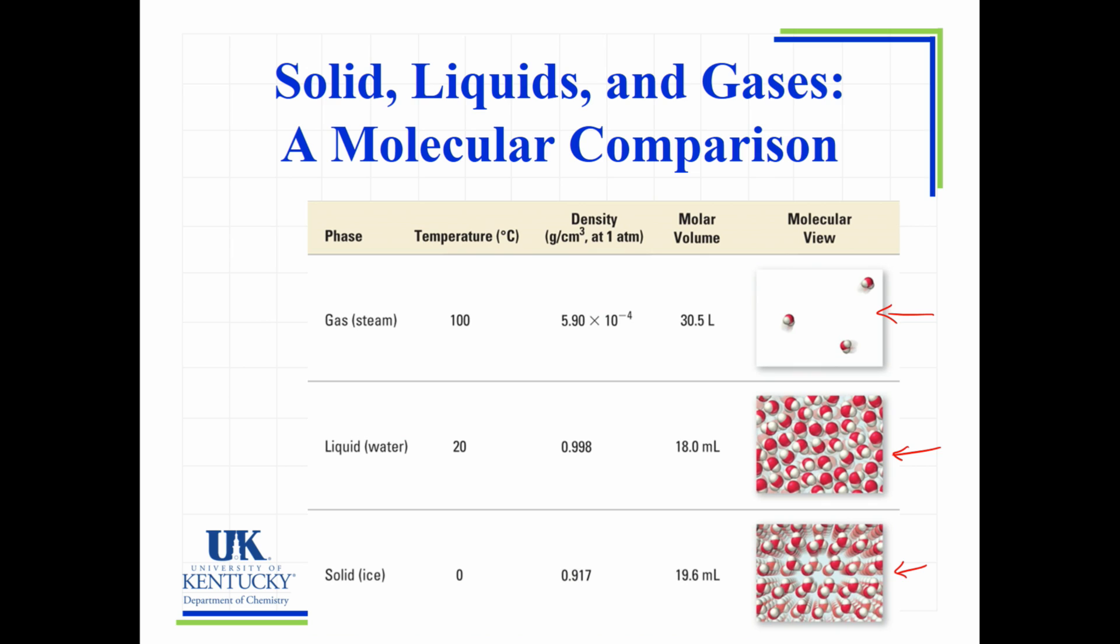The big difference between these properties is in their density. The density of liquid water and ice are about the same. But when you get down to that of a gas, it is way smaller. And this is going to be true for all gases. All gases will be far less dense in the gas phase than they are in the liquid and the solid phase.